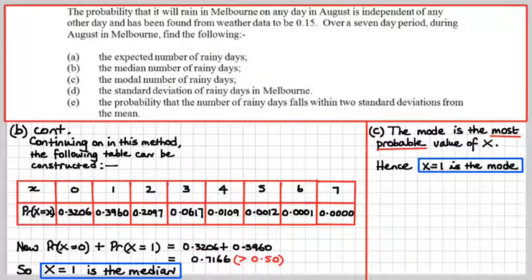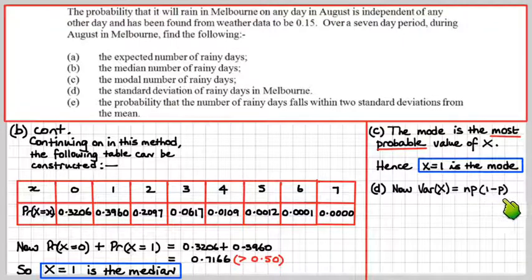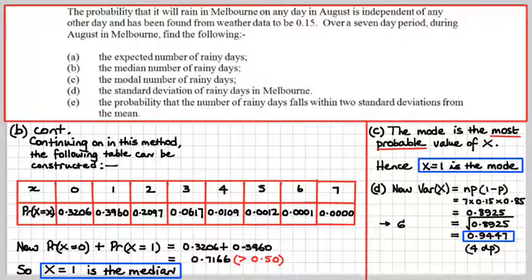Standard deviation? No problem. We know the formula. It's NP times 1 minus P, and we happen to know N is 7 and P is 0.15. It comes to 0.8925. That is the variance. Don't make that mistake. We've got to get the standard deviation, which is the square root of that, and that comes to 0.9447 to four decimal places. Jolly good show. Now we've just got to do Part E.